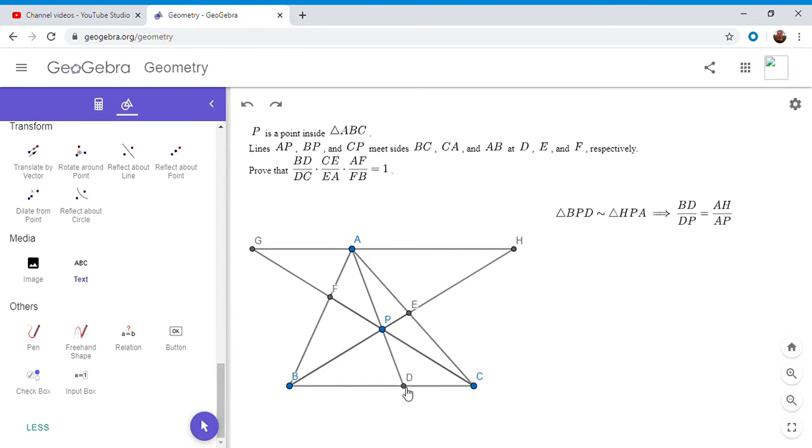And this is easy to see. They have to have all three angles equal. So first of all, they have to have these two angles equal as vertical angles. So APH and BPD. But then by alternate interior angles, angle HAP and angle PDB have to be equal, and the same with the other pair of angles. So BPD is similar to HPA. And therefore, we have the following proportion: BD over DP is PA over AH.